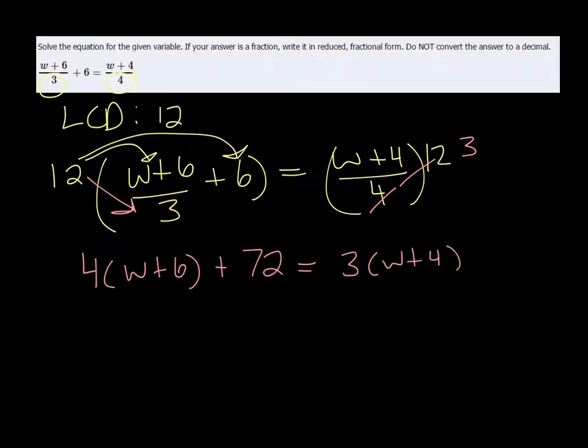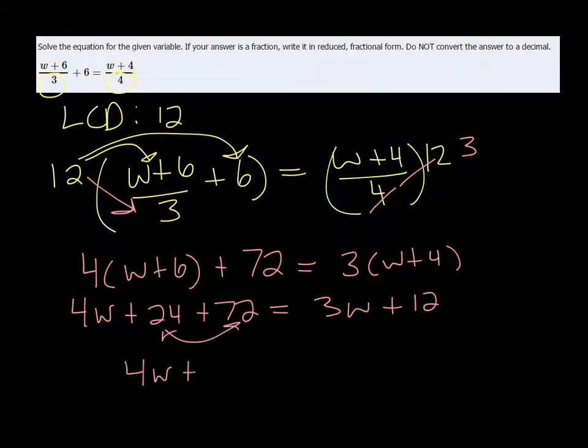And now we want to distribute again, we get 4W plus 24 plus 72 is equal to 3W plus 12. Combining like terms on the left side, I get 4W plus 24 and 72, which is equal to 96, is equal to 3W plus 12.